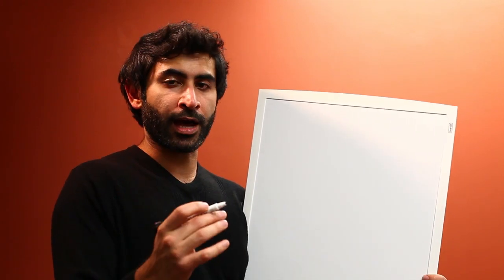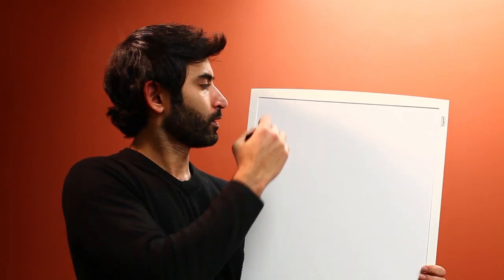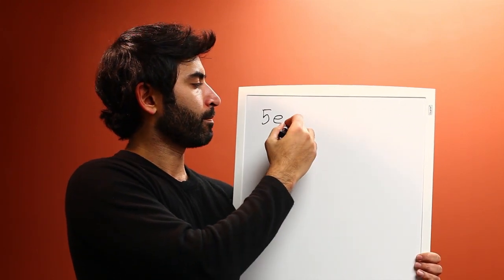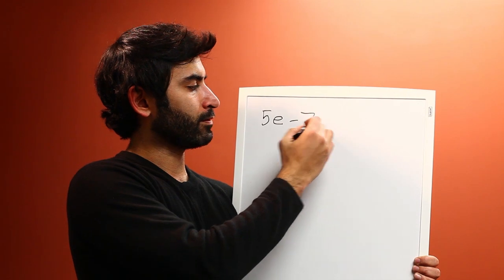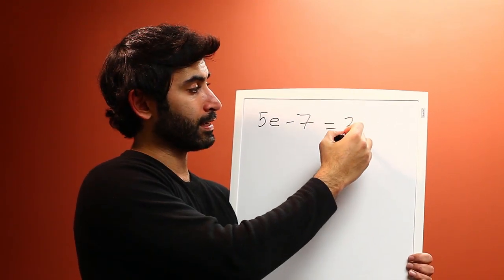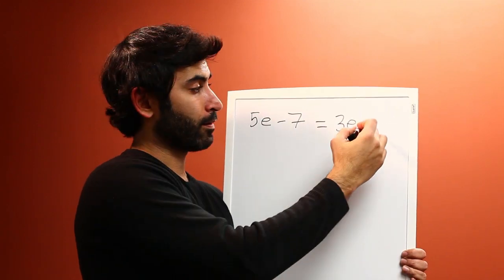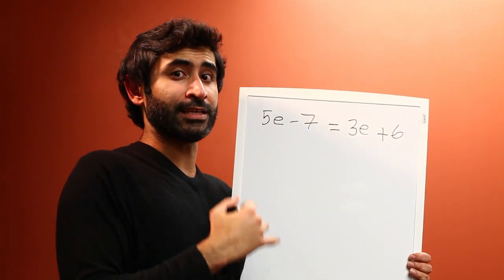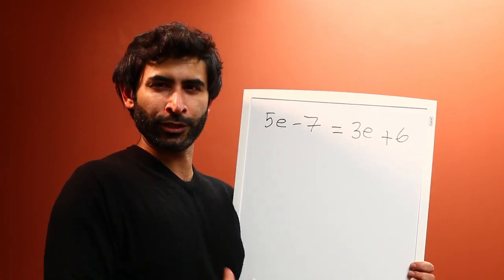Now let's do an even more complicated algebraic equation. Instead of X, I'm going to use the letter E. So let's say 5E minus 7 is equal to 3E plus 6. Now you have E's on both sides of the equation - it's a little bit more complicated.